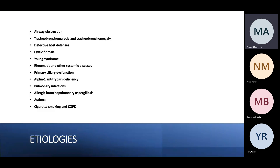Any pulmonary infection can lead to bronchiectasis, as can alpha-1 antitrypsin deficiency. Other syndromes such as tracheobronchomalacia, tracheobronchomegaly, cystic fibrosis, and Young's syndrome can also be causes.